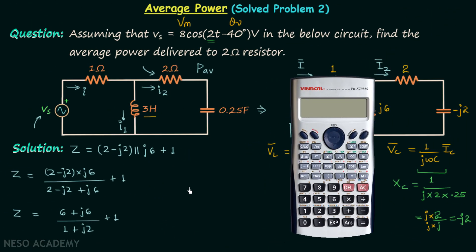Now we will simplify this using our scientific calculator. We will first select complex mode, then input our first complex number 6 + j6 and divide by 1 + j2.